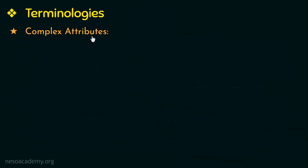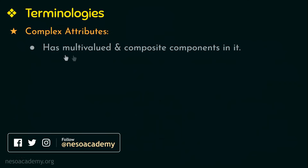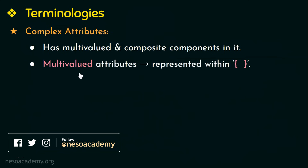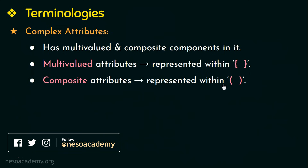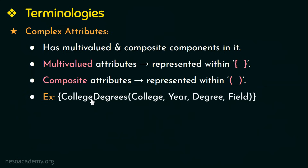Next, let us see what complex attributes are. A complex attribute has both multi-valued and composite components. A multi-valued attribute is represented within curly brackets and composite attributes are represented within round brackets or parentheses. For example, college degrees — represented within curly brackets — is a multi-valued attribute because one person can have more than one degree, and within the parentheses is the composite attribute.